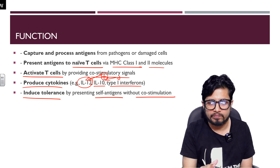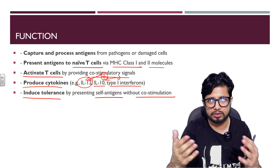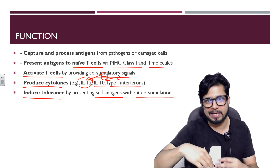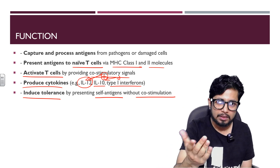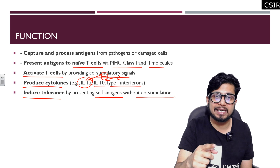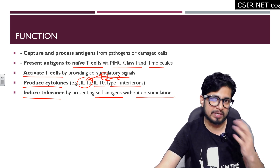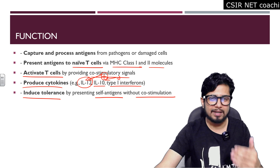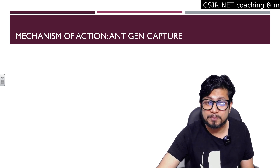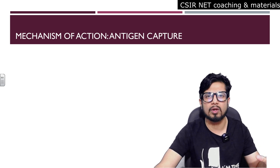Dendritic cells also induce tolerance by presenting self-antigens without co-stimulation. When they showcase a foreign antigen, co-stimulation via CD40 or CD80 is required. But when their own cell components — self-antigens — are presented to T cells, so that T cells can learn to distinguish self from non-self, no co-stimulation is engaged. Co-stimulation is only engaged when a foreign pathogen antigen is presented, not a self-antigen.